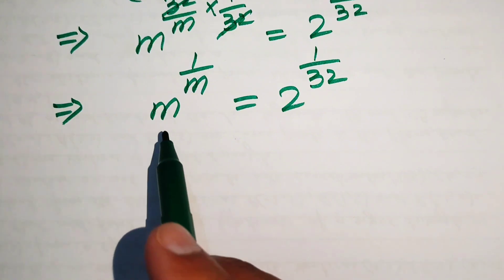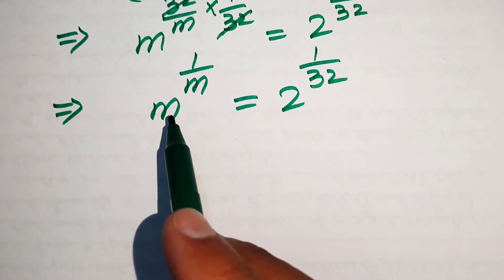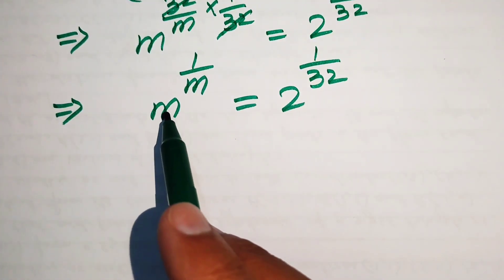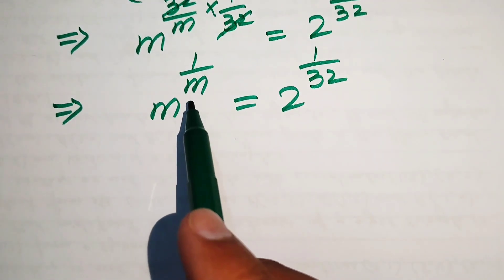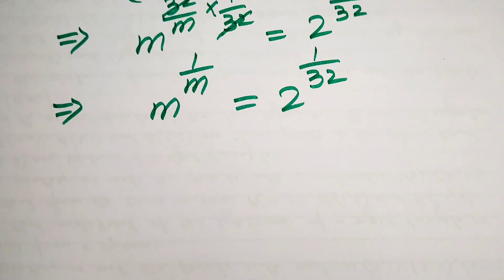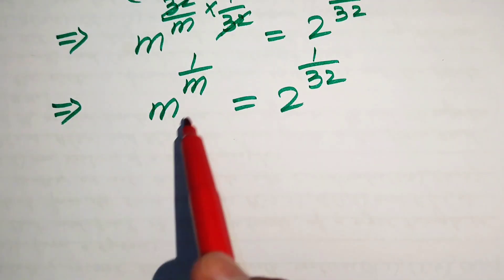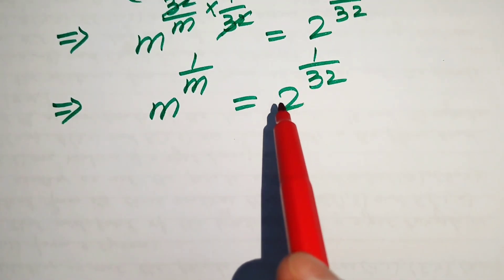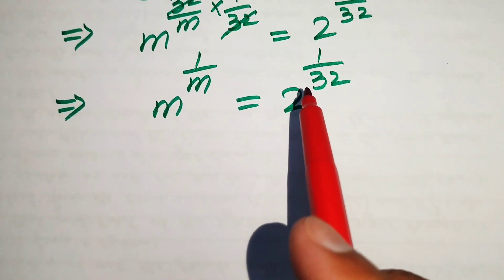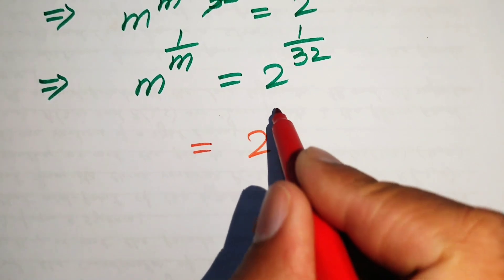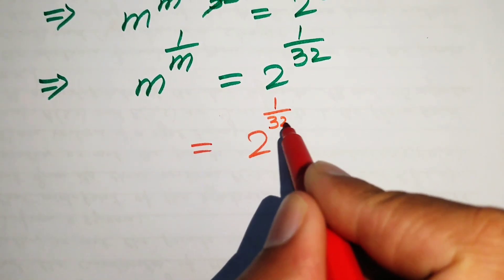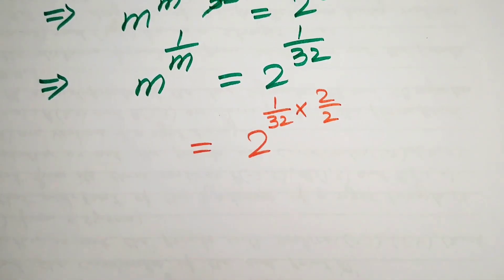Here we notice that the exponent is 1 over m and the base is m, meaning the exponent is the reciprocal of the base. We need to create the same condition on the right hand side. To do this, we multiply and divide the exponent of 2 by 2, writing it as 2 to the power of 1 over 32 multiplied by 2 over 2.